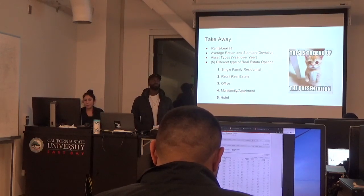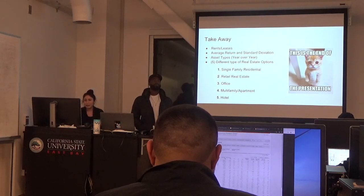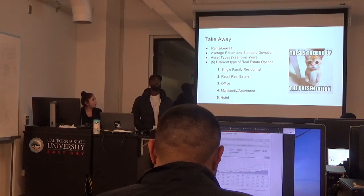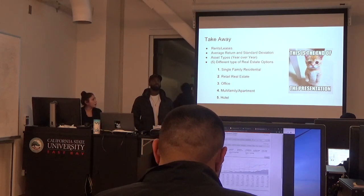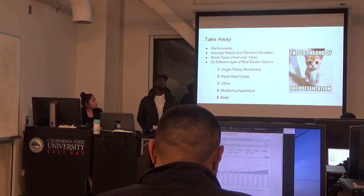So the main topics are the rents and leases, average return and standard deviation, the asset types, and then the five different types of real estate: single-family residential, retail, office, multi-family apartment, and hotel.